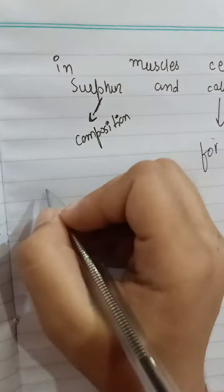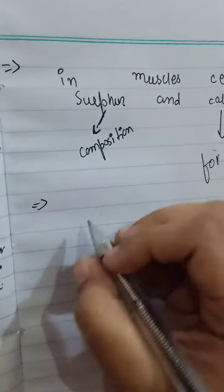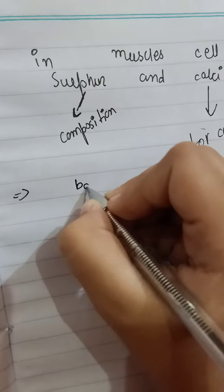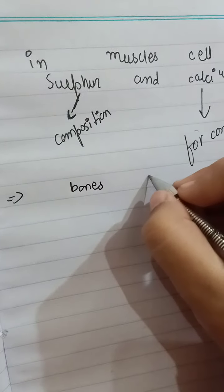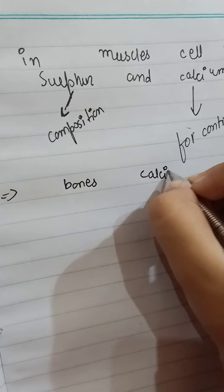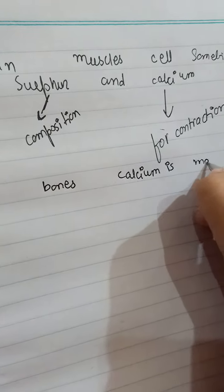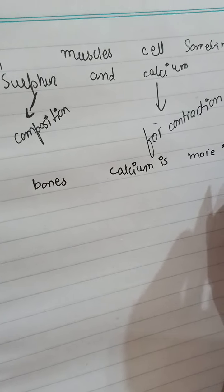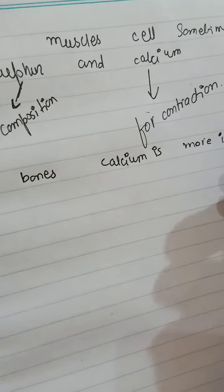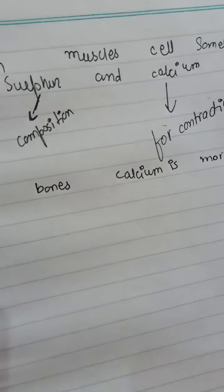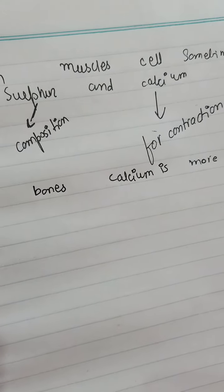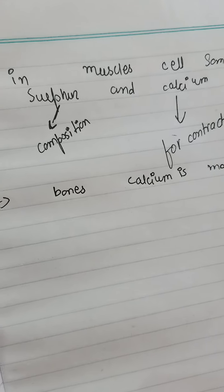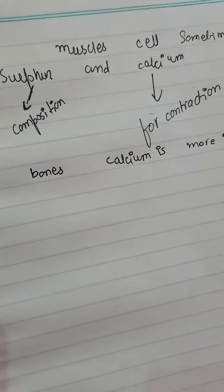If we are talking about the bones, calcium is more important because in bones we need vitamin D, and vitamin D is related to calcium. So if there is a deficiency in the bones, it means there is a deficiency of calcium in our bones.